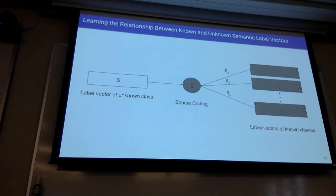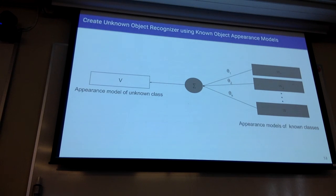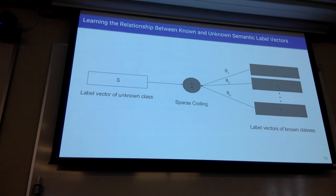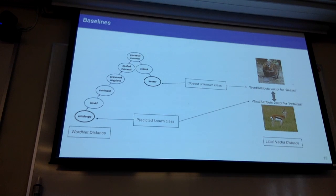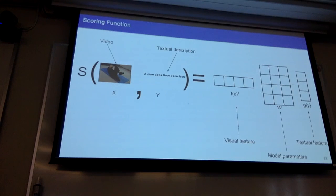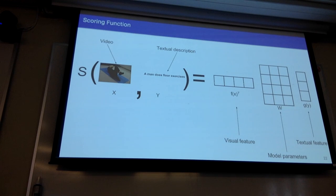For zero-shot object recognition, I learned parameters for how to transform known object attributes to unknown object attributes, then used those parameters to transform the known classifier to an unknown classifier. For action recognition, I learned an embedding — projecting both the video and the sentence description into a common embedding space so you can tell whether they are similar or not.